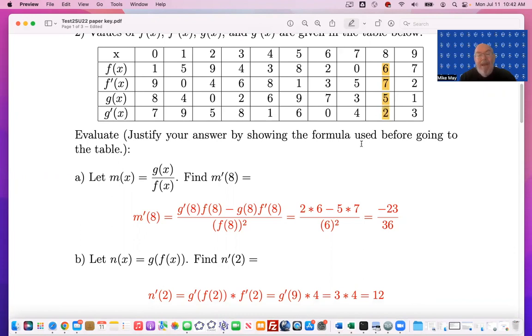And at 8, g prime of 8 is 2, f of 8 is 6, g of 8 is 5, and f prime of 8 is 7. Everything comes together as minus 23 over 36.